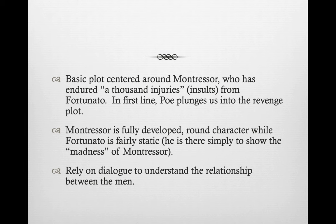The basic plot is centered around Montresor, who says that he has endured a thousand injuries and insults from a character named Fortunato. In the first line, Poe immediately plunges us into this revenge plot. Montresor is a fully developed round character — the first-person narrator whose thoughts and feelings we access. Fortunato is his foil, fairly static, really there to show us the sort of madness or craziness of Montresor.